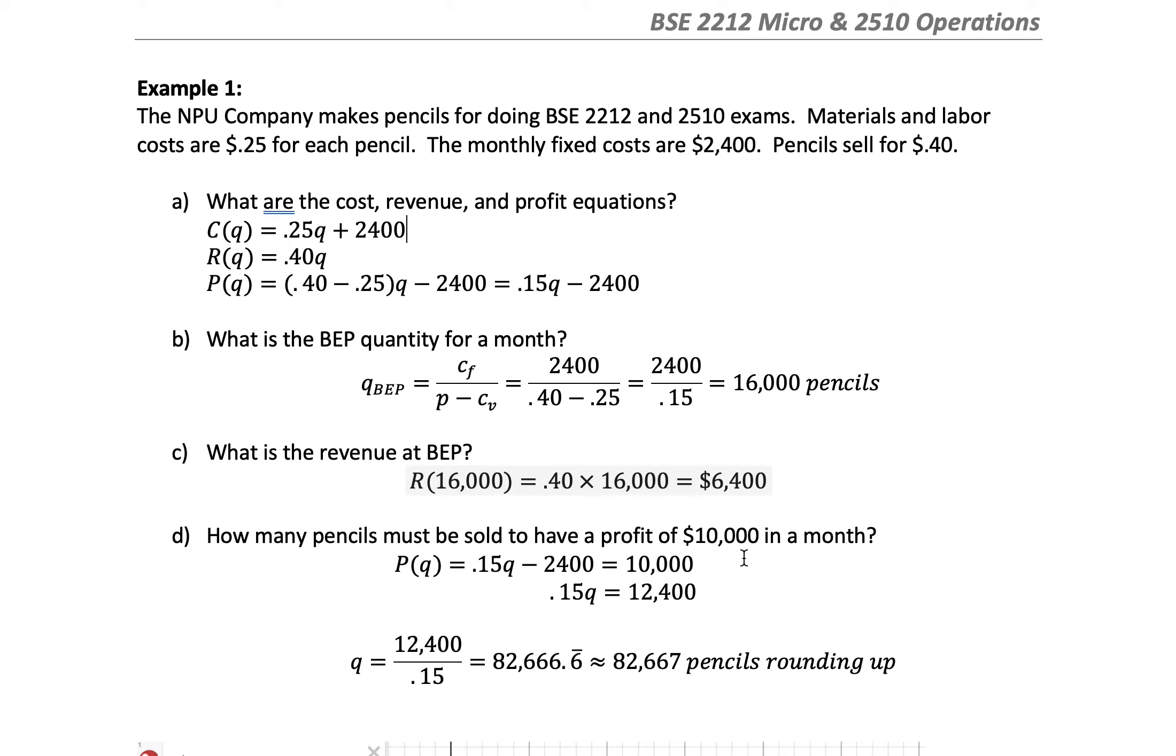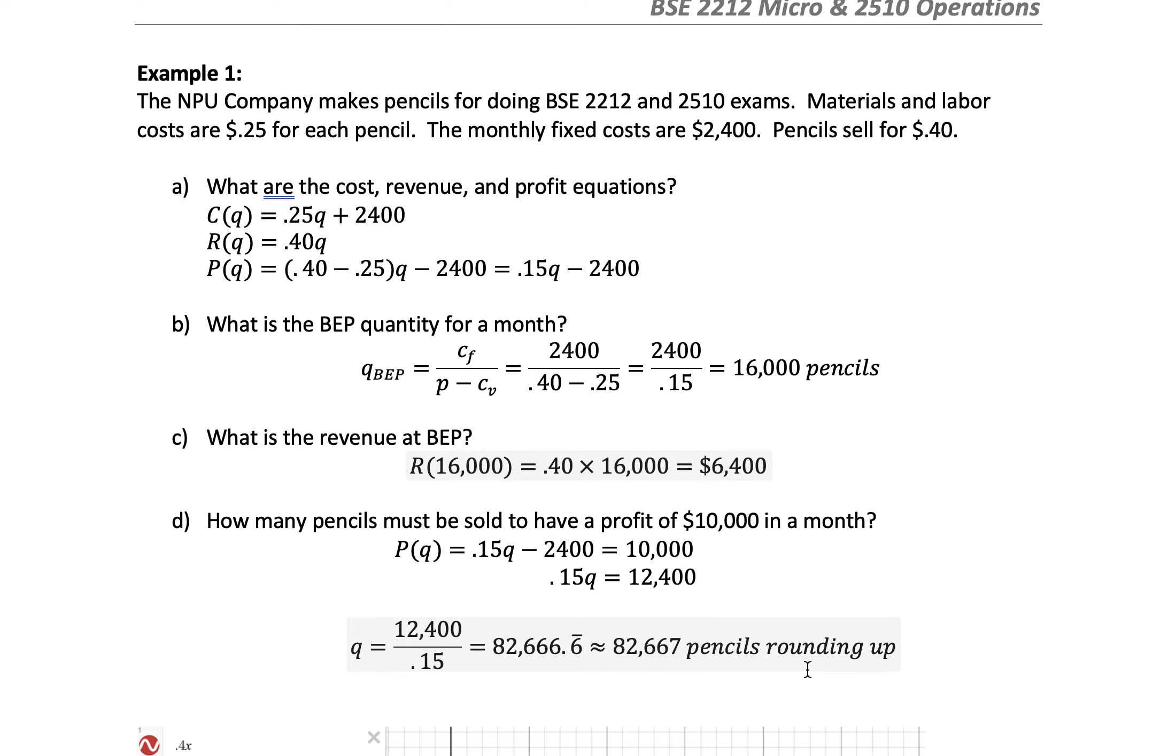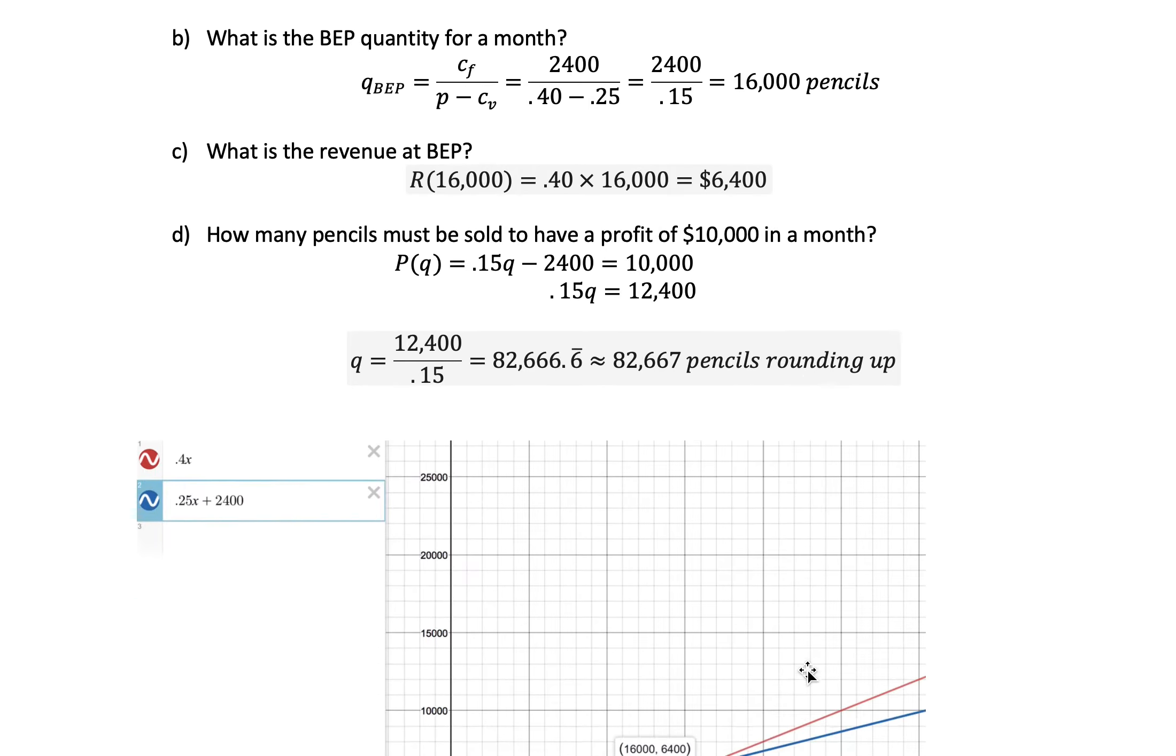How many pencils must be sold to have a profit of $10,000 in a month? I don't want to break even, I want to make $10,000 a month so I can make $120,000 a year. I take the profit equation, instead of making it equal to zero, I make it equal to $10,000. I add $2,400 to both sides, and I get $12,400 equals 0.15Q. I divide by 0.15, and now I have to sell 82,667 pencils rounded up. That's going to take some effort - I'm probably selling pencils all over the place.